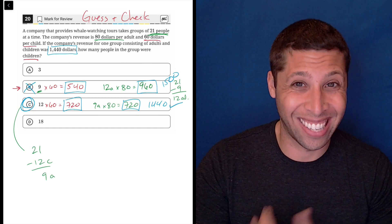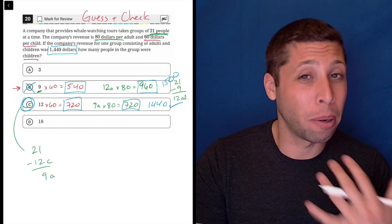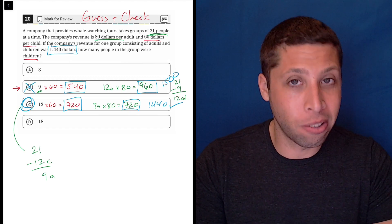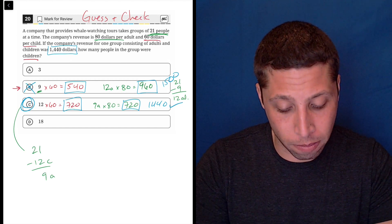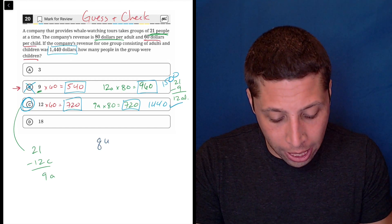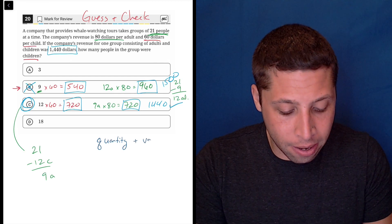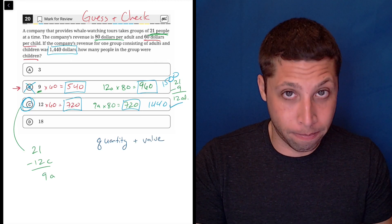But also there's a chance that we get a question like this and it's not multiple choice. It's one of those student produced response questions. And then we could still guess and check, but it would definitely be harder. So it might be easier in those cases to come up with the equation. So this is what I would call a quantity and value system.